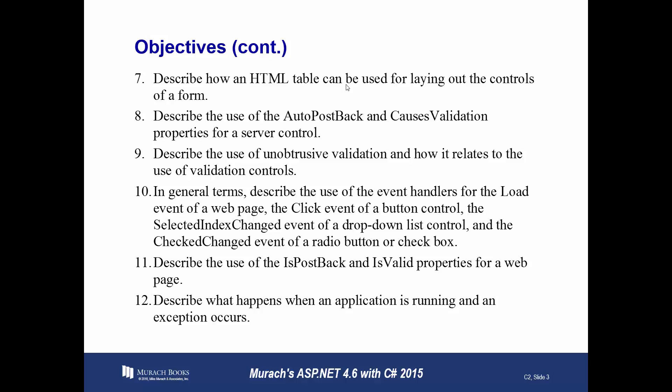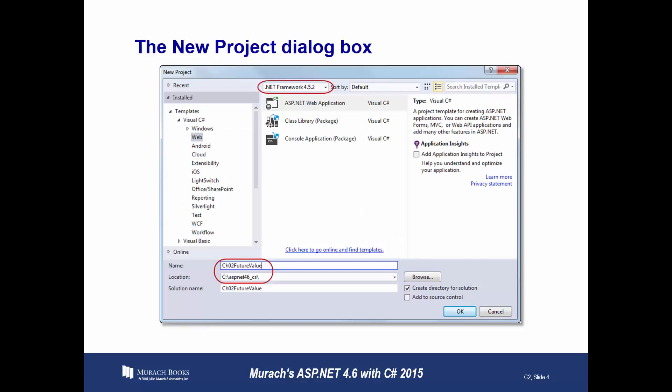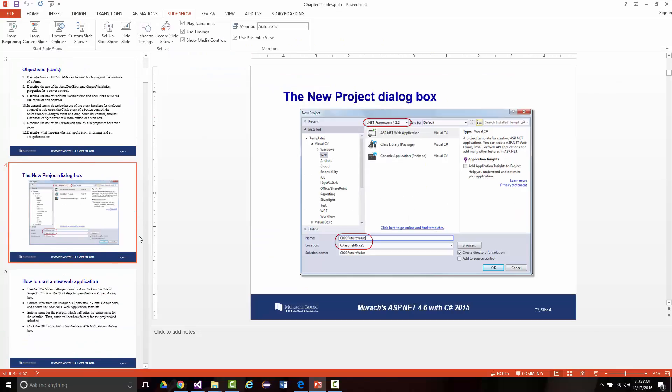We'll talk about the IsPostBack and IsValid properties for a web page. Anything that starts with 'is' means it can return true or false — it's a Boolean. Finally, we'll describe what happens when an application is running and an exception occurs. Rather than going through all this right here, let me bring up Visual Studio.